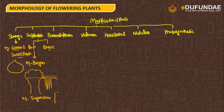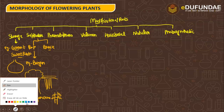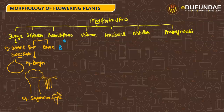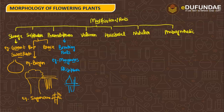In supportive roots we discussed prop roots or pillar roots, with the example of the banyan tree — those hanging structures are brace roots which also provide support to weak plants. Pneumatophores are breathing roots found in mangrove plants such as Rhizophora, which grow in saline or swampy conditions.